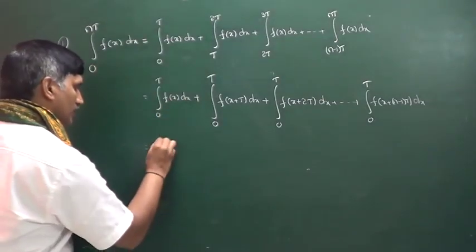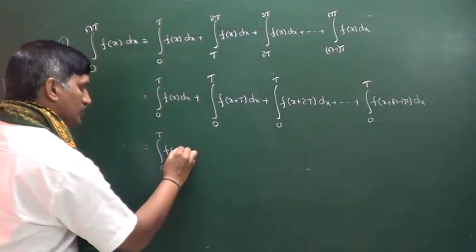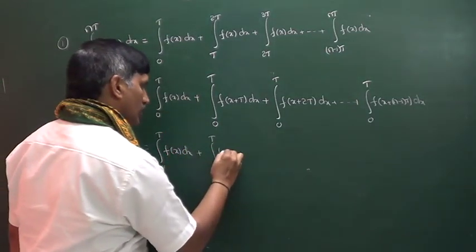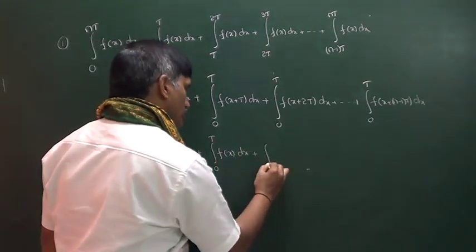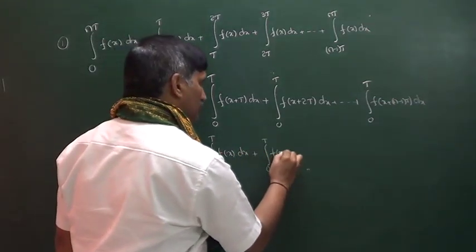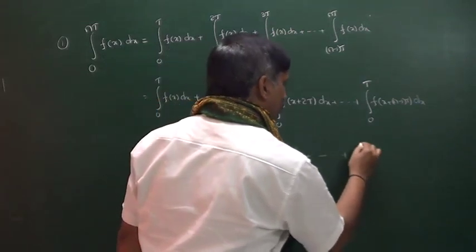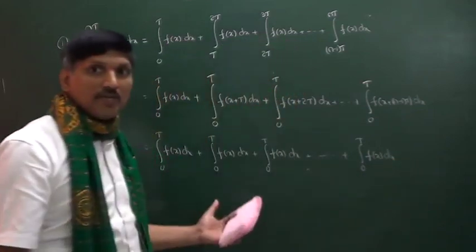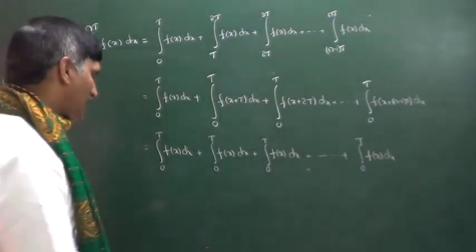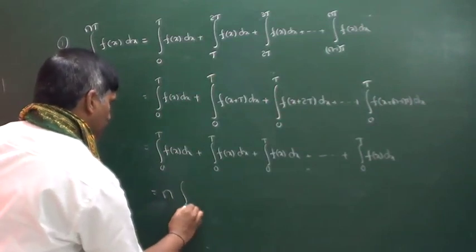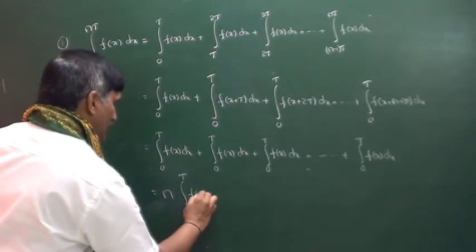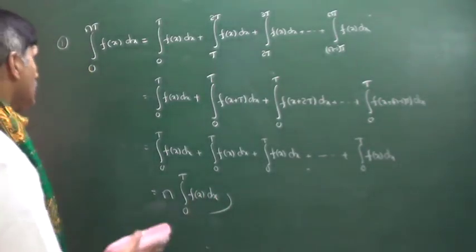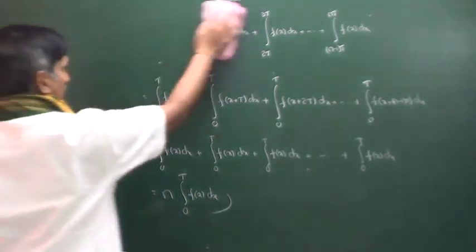The same integral appears n times. That's why we can write integral from 0 to nt of f(x)dx equals n times the integral from 0 to t of f(x)dx. This is the first property based on the periodicity of a function.